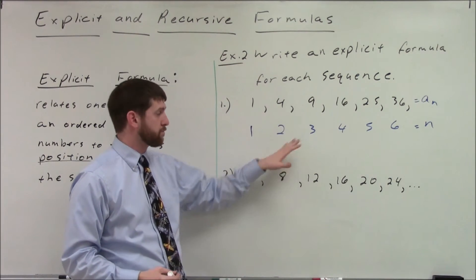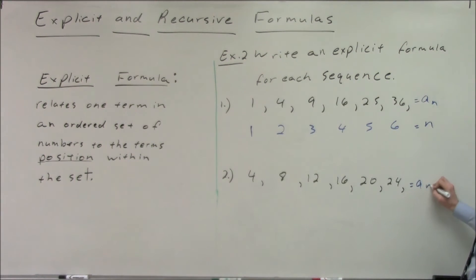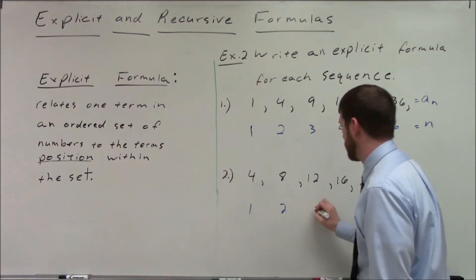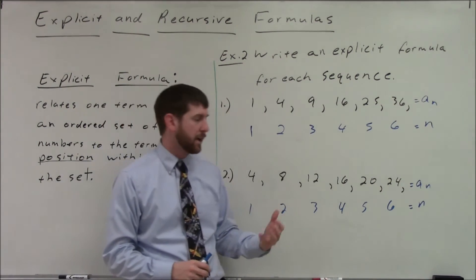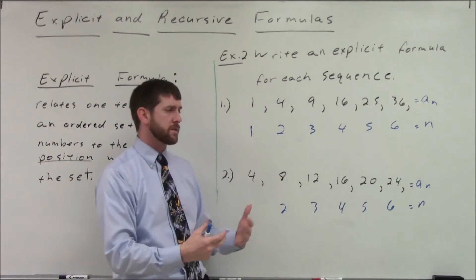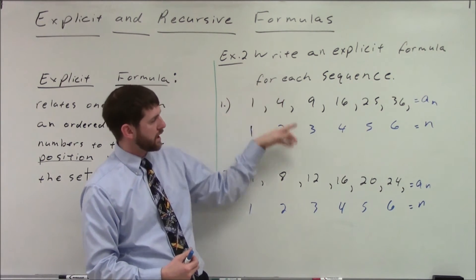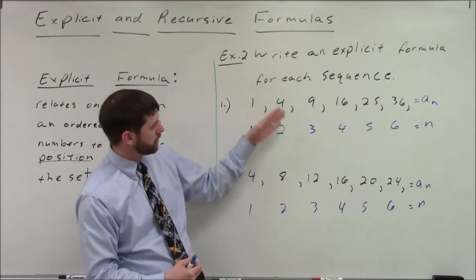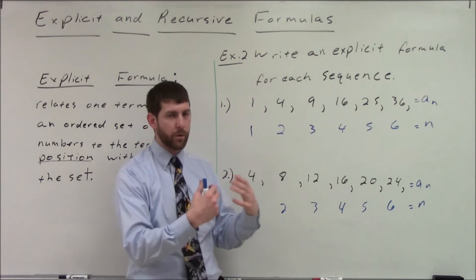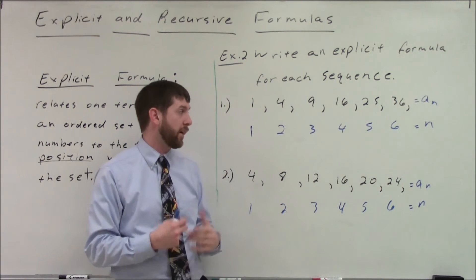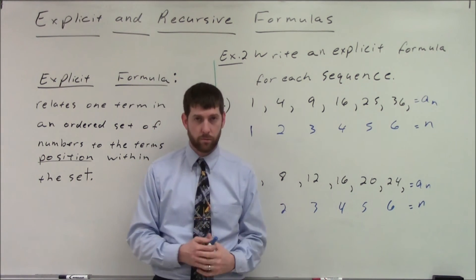Let's pause and write down the positions for the second example too. If this is a sub n, and these are my n's: position 1, 2, 3, 4, 5, and 6. I want you to pause the video and see if you can identify the pattern that relates the positions to the actual numbers in the sequence. What's going on between 1 and 1, 2 and 4, 3 and 9, 4 and 16? Or 1 and 4, 2 and 8, 3 and 12, 4 and 16? Pause and play around with that, then we'll write the actual explicit formula.